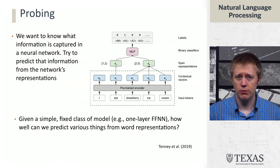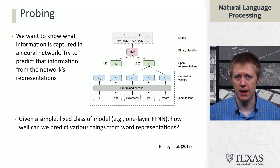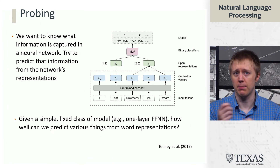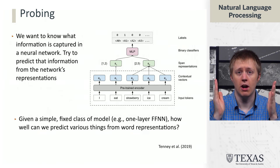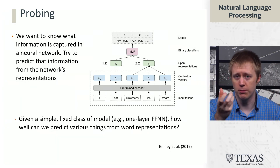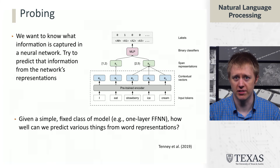The idea behind using a simple classifier is that it forces most of the heavy lifting to happen in the pre-trained encoder. If the model does well, it indicates that the blue vectors being passed in are quite good. One critical thing: we keep the pre-trained encoder and these blue vectors frozen — we don't back-propagate into them. Because what we're asking is, given this existing model, how well can we predict this information from it? Changing the model to make it predict better would defeat the purpose of this experiment.